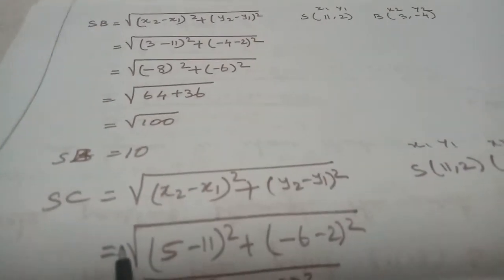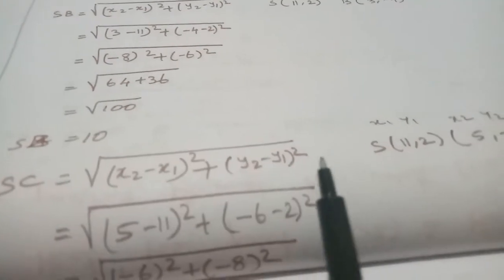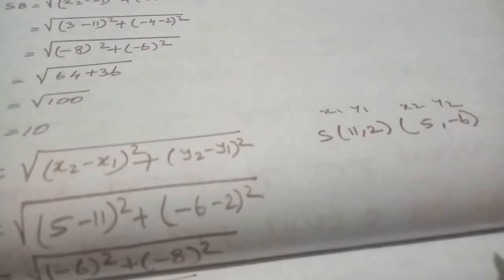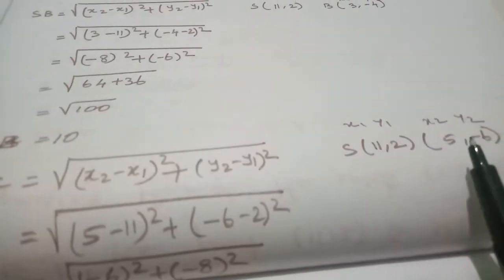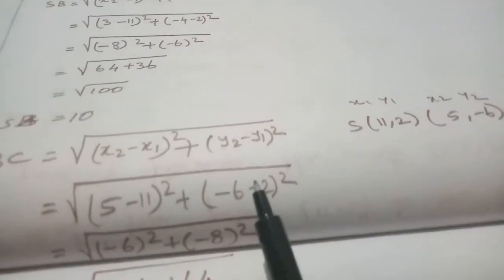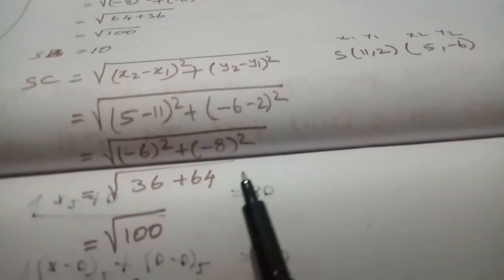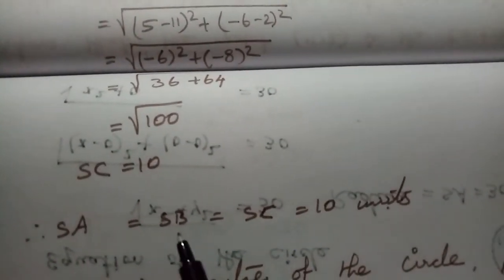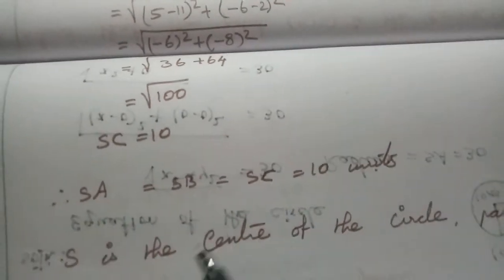Now SC: using S(11,2) and C(5,-6). SC = √[(5-11)² + (-6-2)²] = √[(-6)² + (-8)²] = √[36 + 64] = √100. So SC = 10. Therefore SA = SB = SC = 10 units.